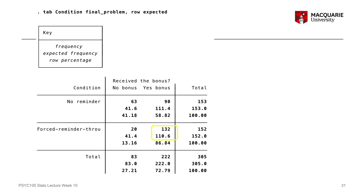Just like we saw on the clustered bar chart, comparing the observed counts with the expected counts shows us any kind of relationship between the two variables. Remembering the chi-square formula, the more similar the observed and expected counts are, the smaller the chi-square test statistic is, and the more likely there's no association between the variables. Whereas the bigger the difference between the expected and observed counts, the bigger the chi-square test statistic, and the more evidence there is of an association.